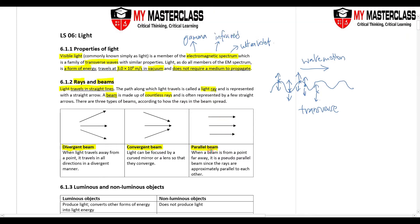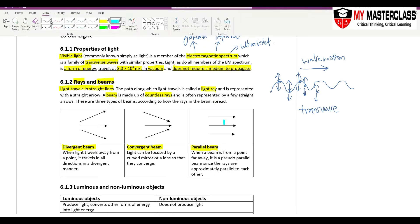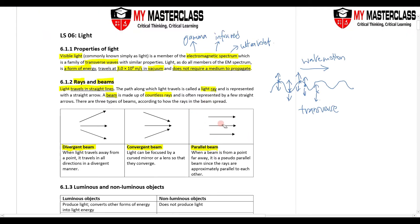Extra note: if a beam is from a point very far away, the rays are going to be approximately parallel to each other. The angle between them is like 89.9999 degrees, so they are as good as parallel. This point is very important — if it's from a point far away, you have a parallel beam. Object far away equals parallel beam.